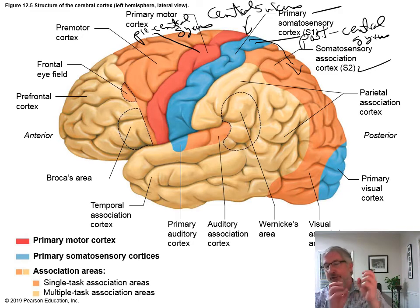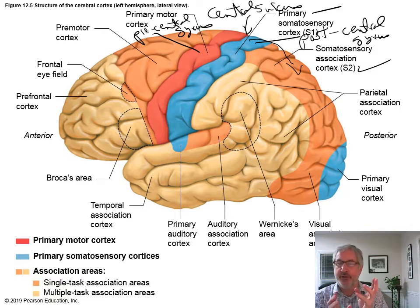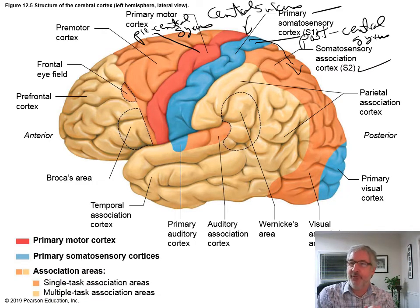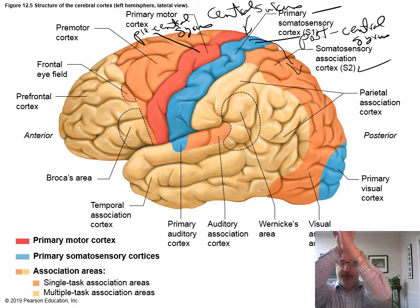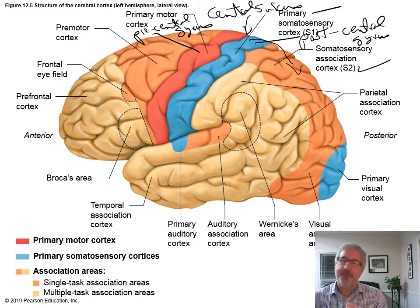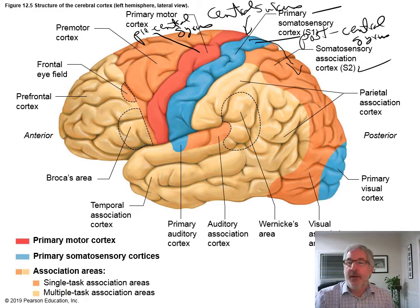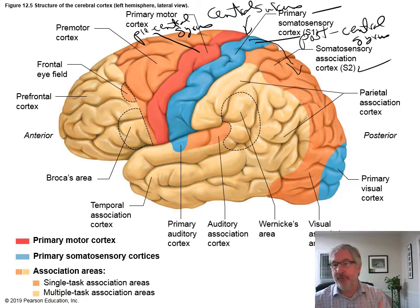The sensory information came from those projection fibers coming up, crossing over, and going up into the left and right hemispheres of the brain. They come up into this somatosensory area. So you have the somatosensory association cortex, which then decides what to do with that information.